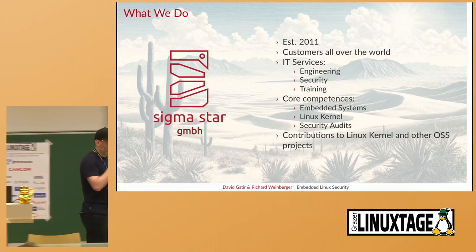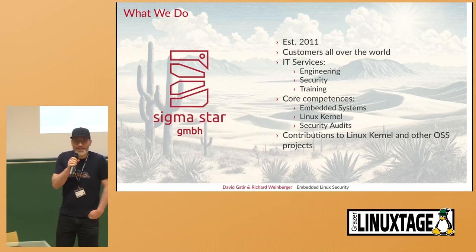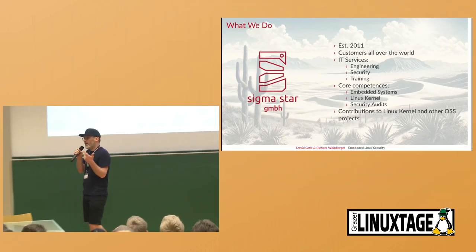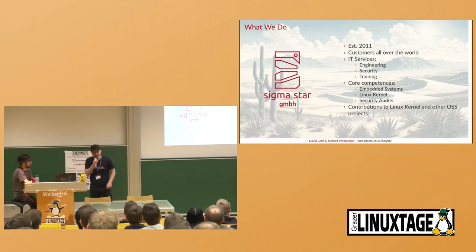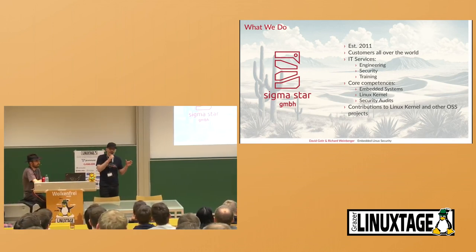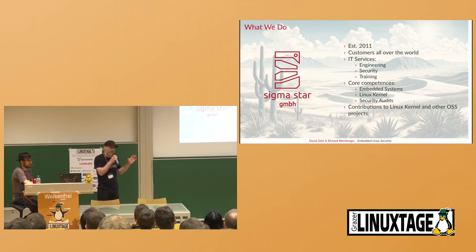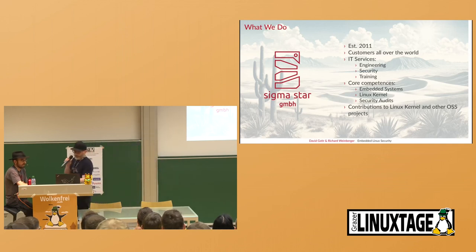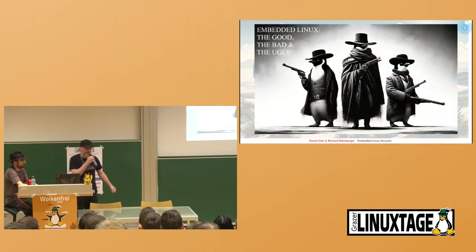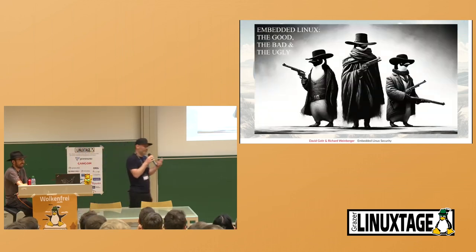We work for a company mainly doing exactly that — we work with embedded systems, we work on software engineering projects of all kinds, and we do trainings in security. We mainly focus on embedded systems, Linux kernel topics, and security — everything from consulting down to looking at other people's code and finding bugs. We also contribute a lot to open source software projects and the kernel, and in all of that we see a lot of security issues.